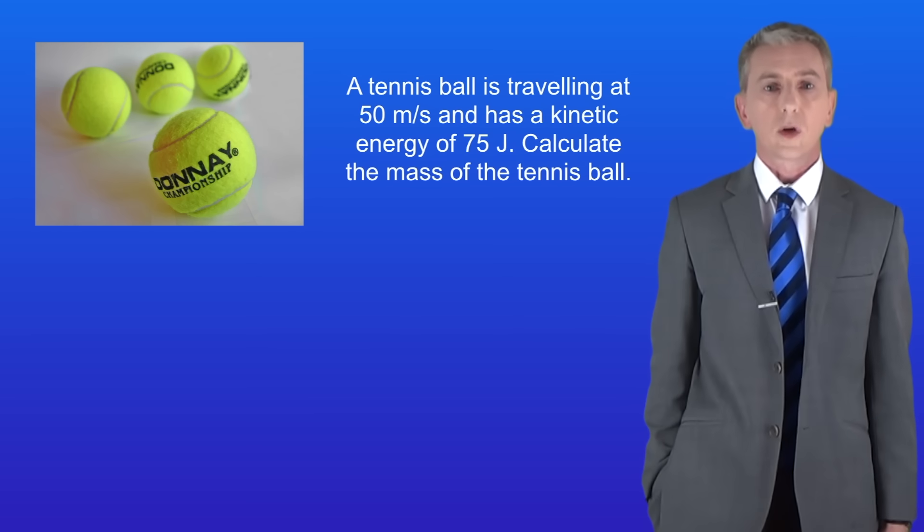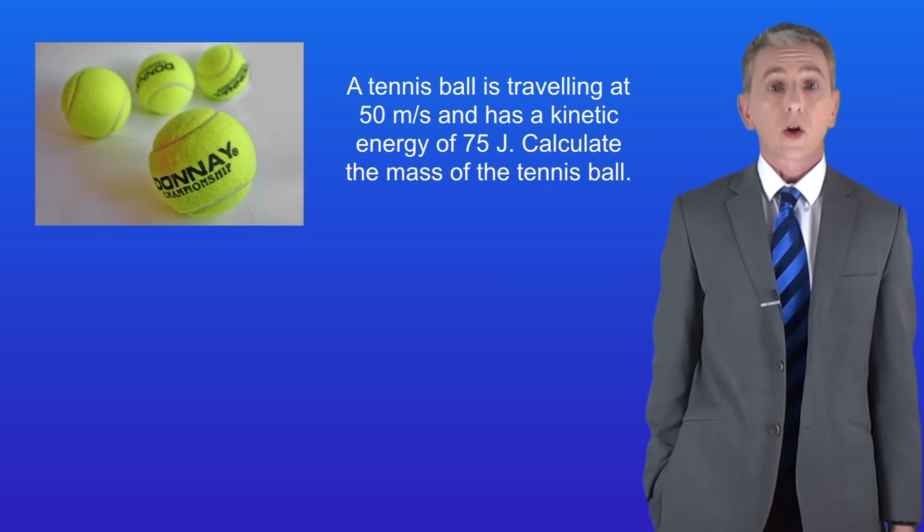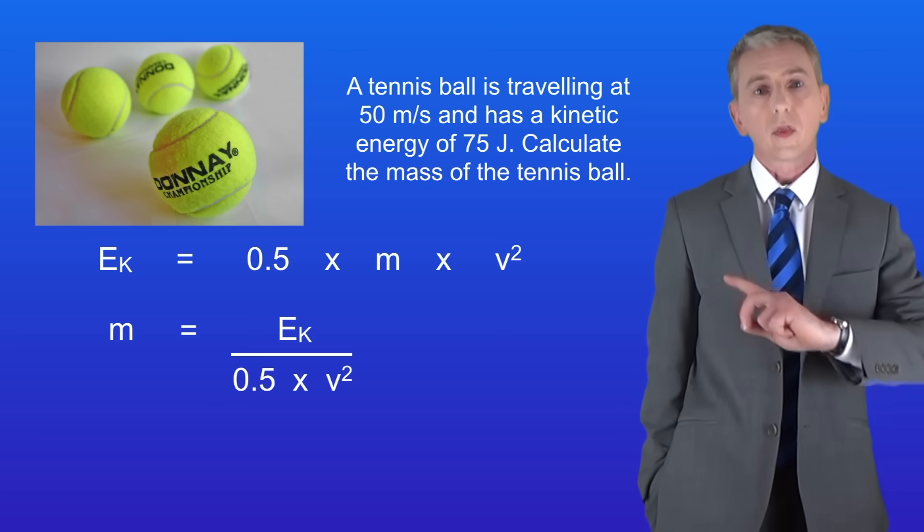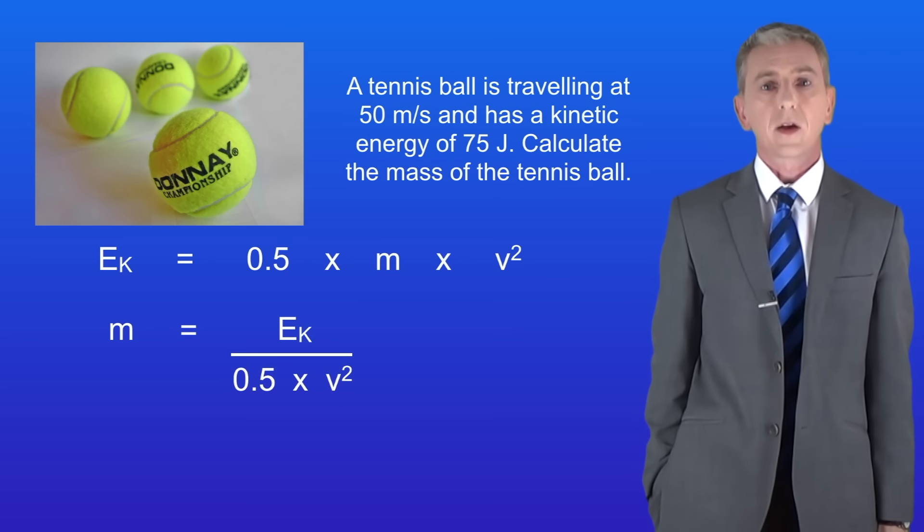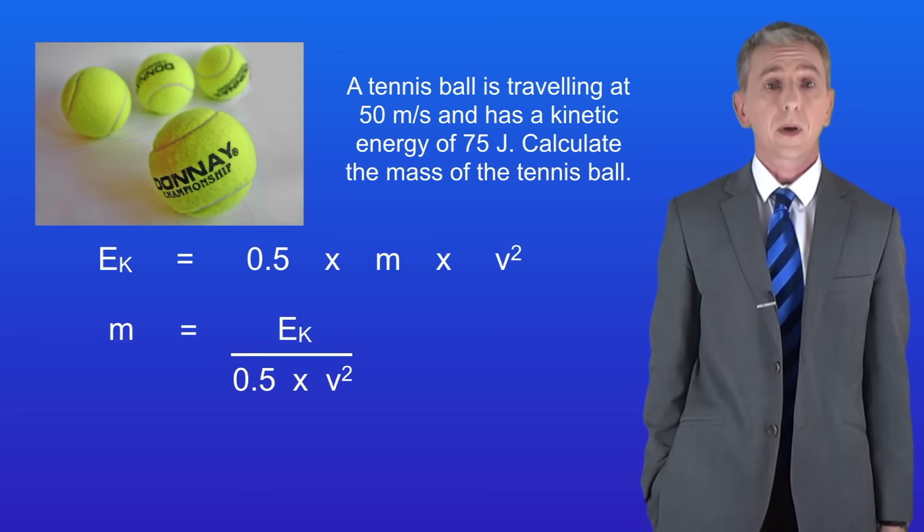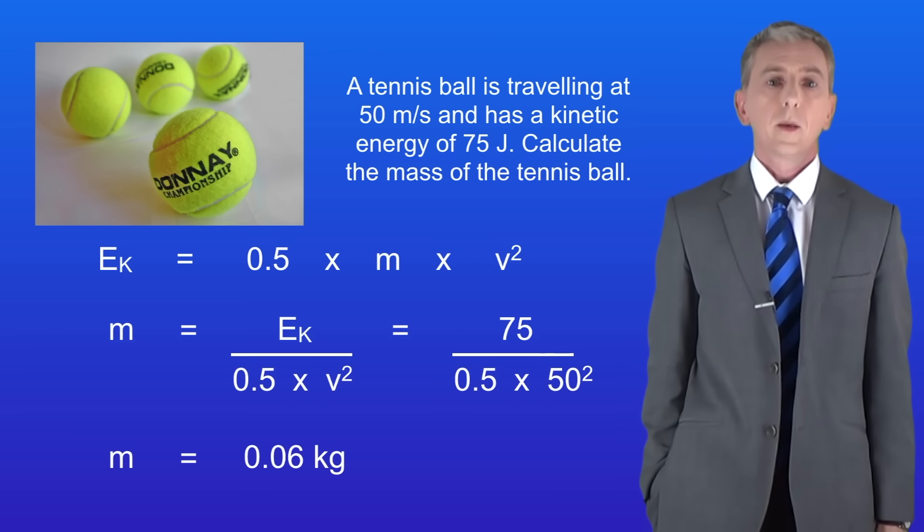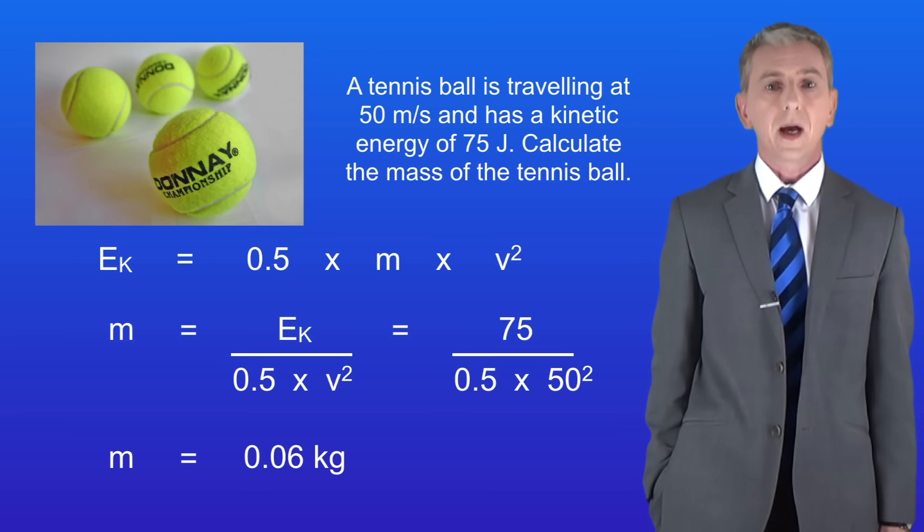Okay now in this question we're given the kinetic energy and we've got to use this to calculate the mass. So we need to rearrange the equation for kinetic energy like this. The mass is the kinetic energy divided by 0.5 multiplied by the speed squared. Putting our numbers into the equation gives us a mass of 0.06 kilograms for the tennis ball.